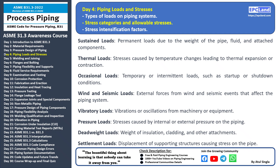Understanding how different types of stresses affect piping systems and knowing the limits within which those stresses are safe is essential for proper design. The first stress category is primary stress, which arises directly from sustained loads on the piping system. It includes the weight of the pipe, fluid, and attached components, and is a result of the system's normal operation.